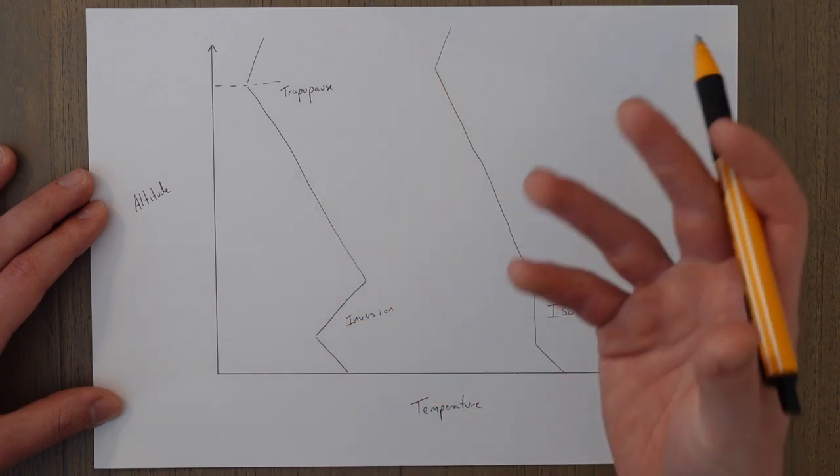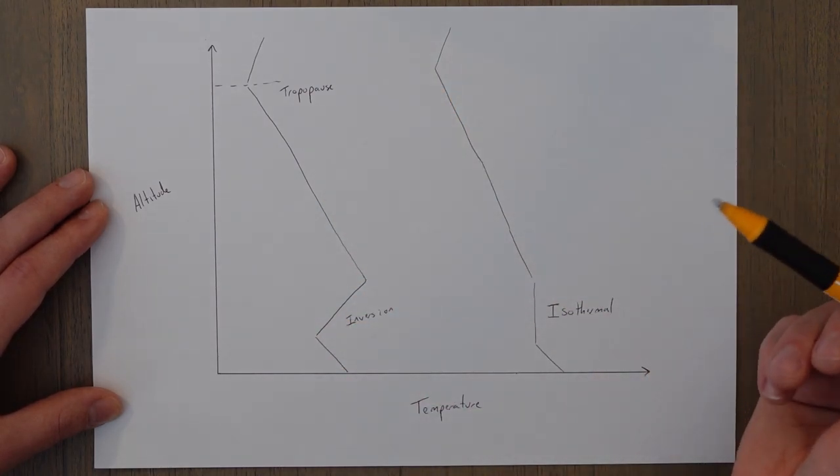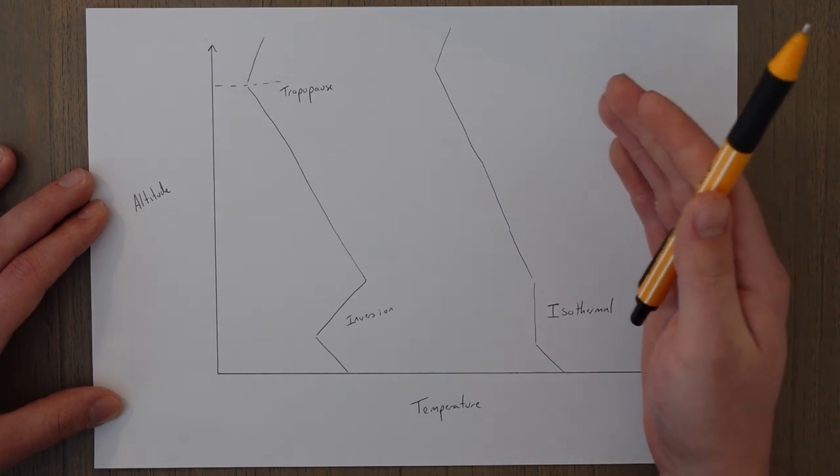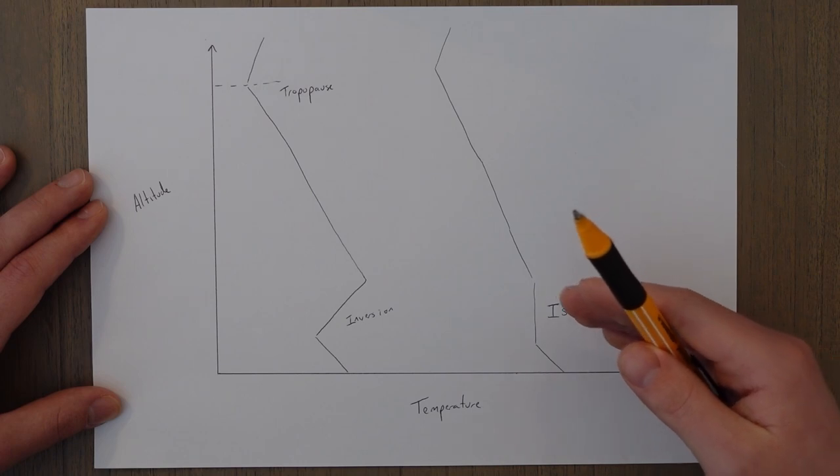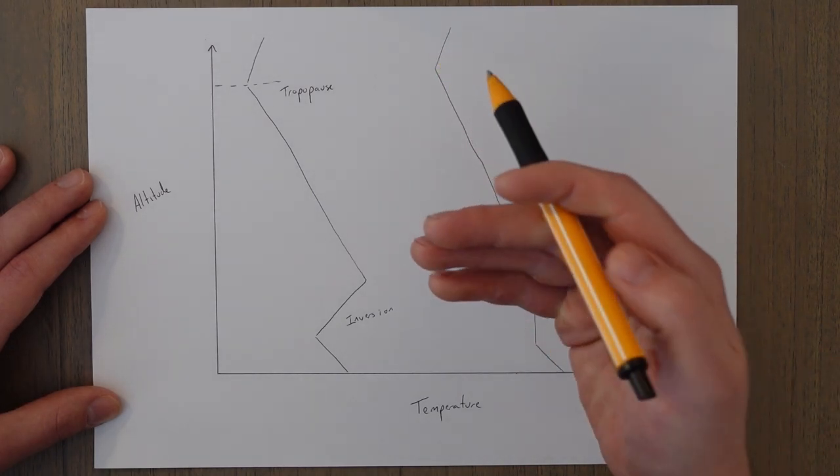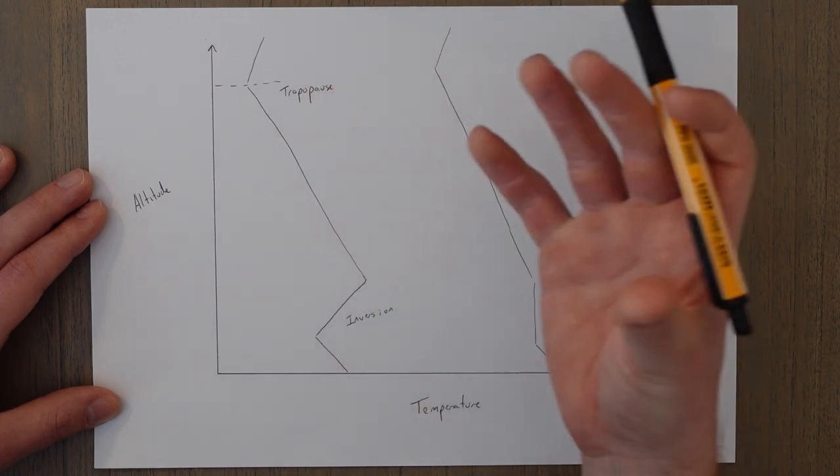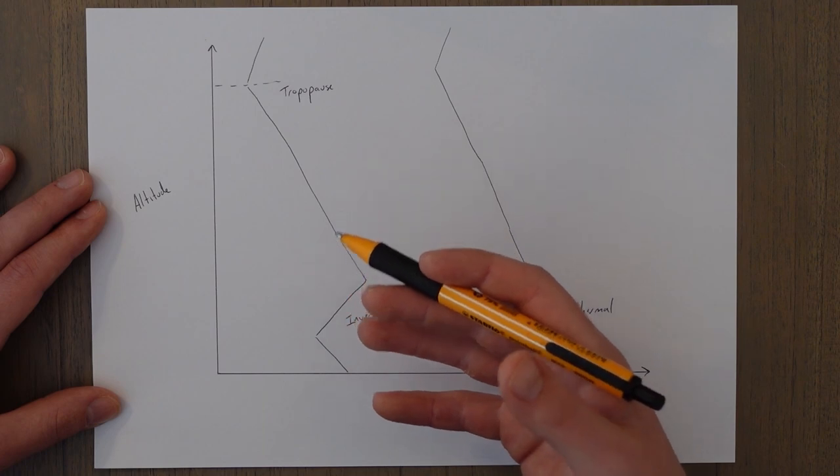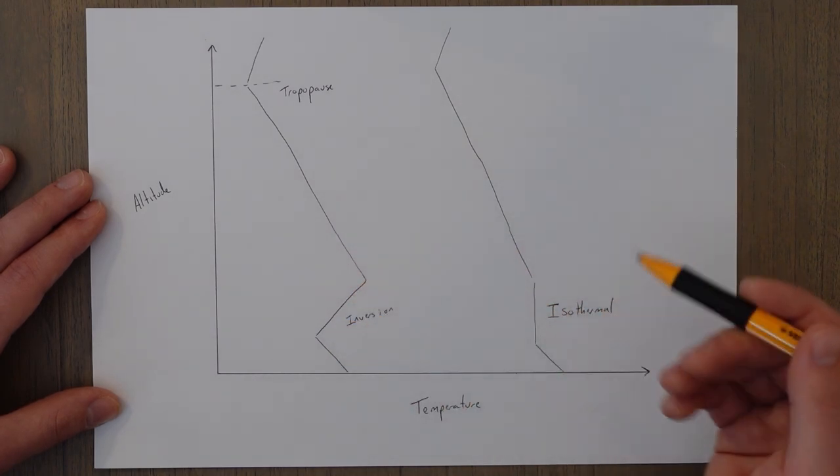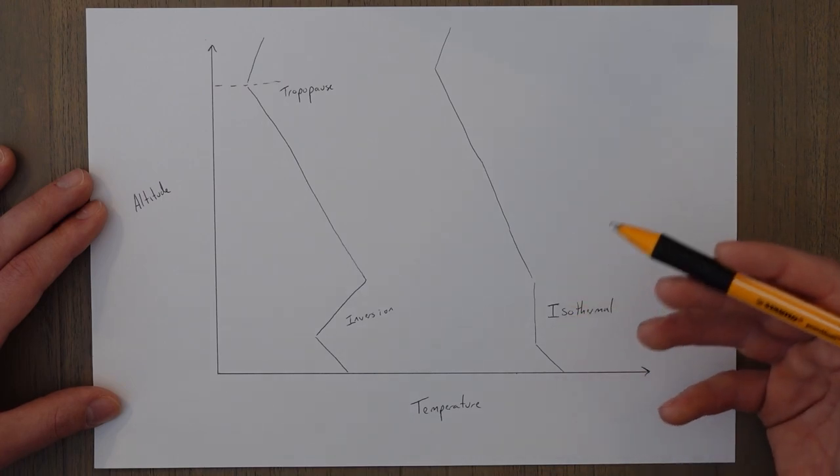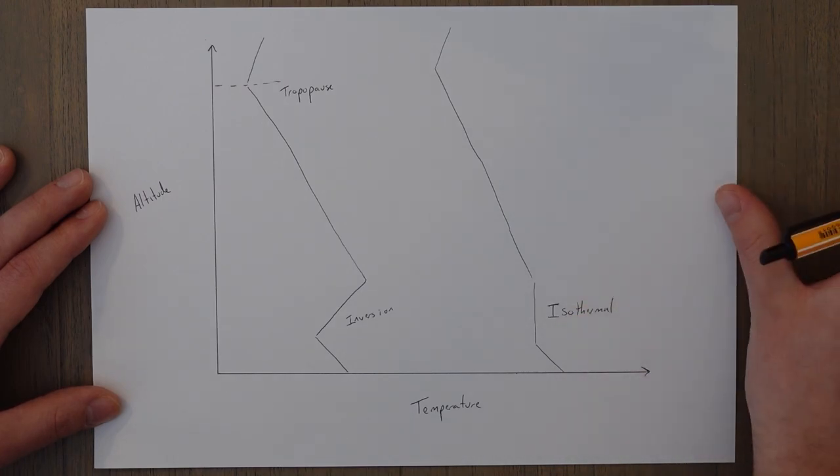A similar thing can happen with frontal inversions. You get a warm air system moving in and it is forced above the cold air and the cold air is then trapped on the bottom and the warm air is on top. Another inversion occurs at the top of the troposphere at the tropopause although I suppose that's kind of an isothermal layer and temperature remains constant above it. It would technically be an inversion.